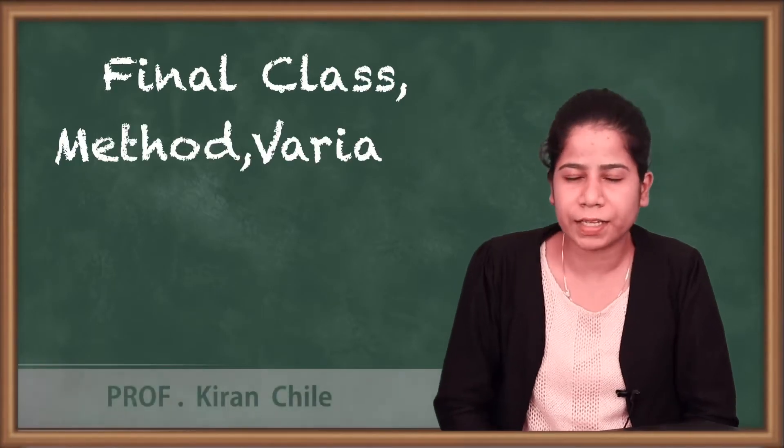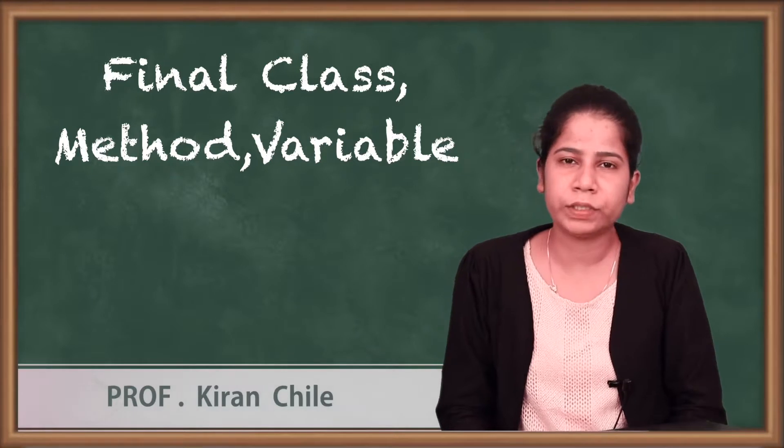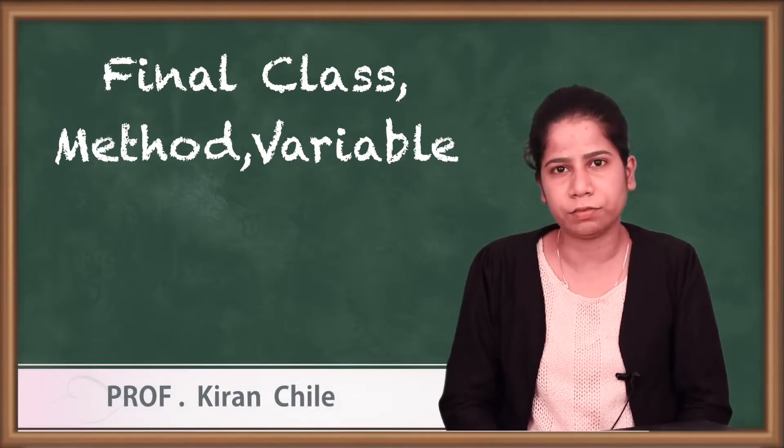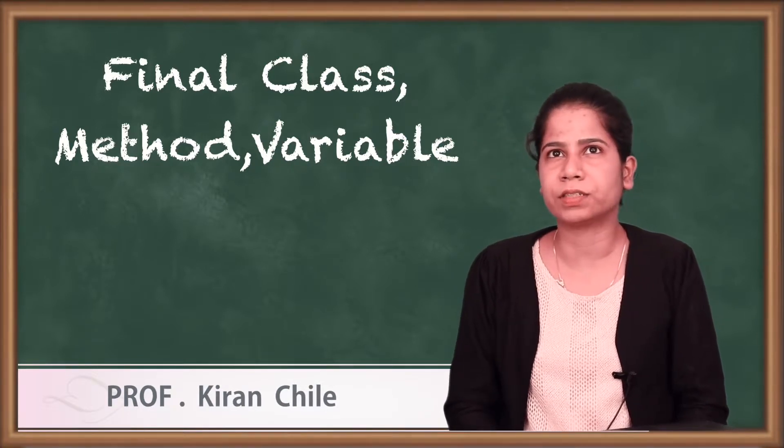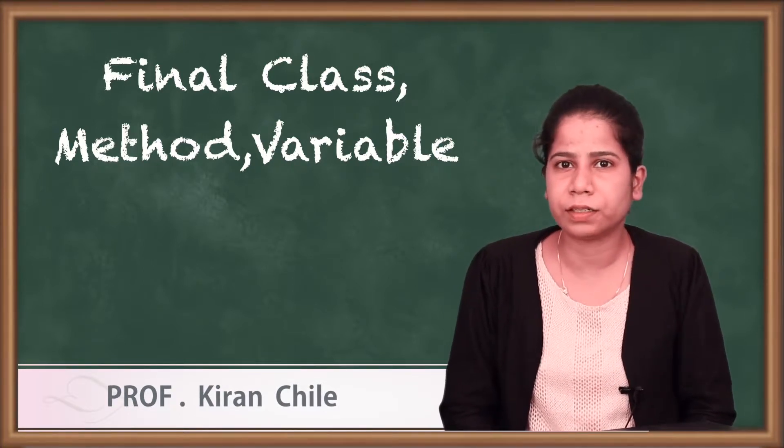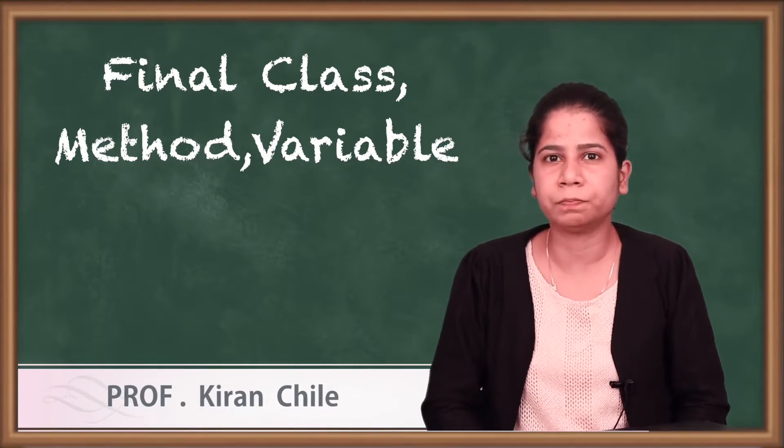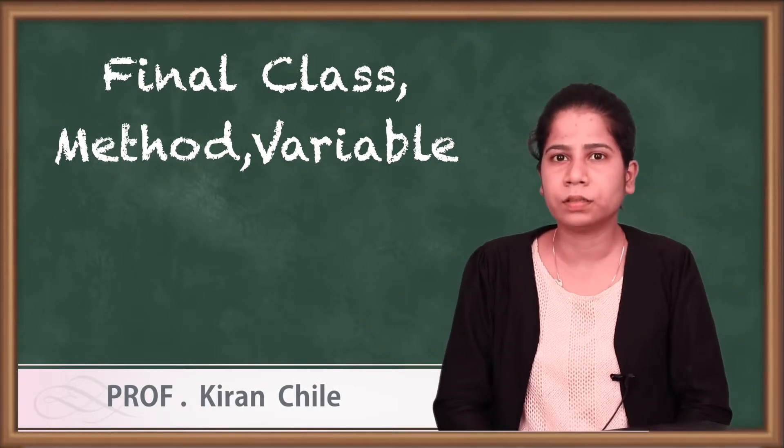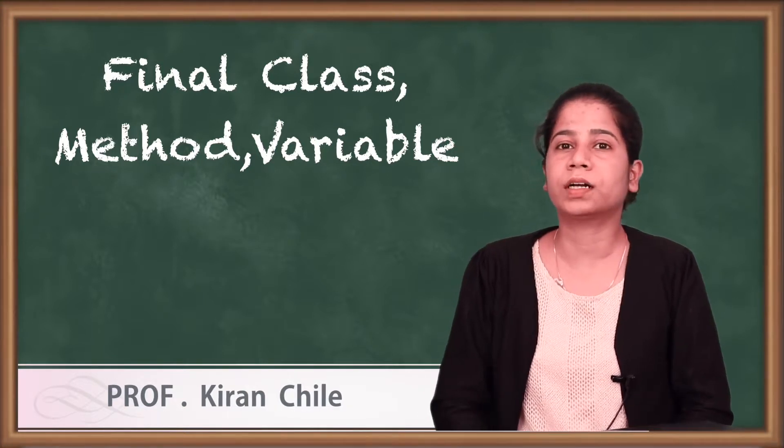Hello friends, in the last video we have seen something called dynamic method dispatch. Now in this video we are going to see something very important, that is the final keyword. We have already learned about the static keyword, then we have seen the this keyword, super keyword. Now another type of access specifier which we can apply to methods, variables, as well as to the class.